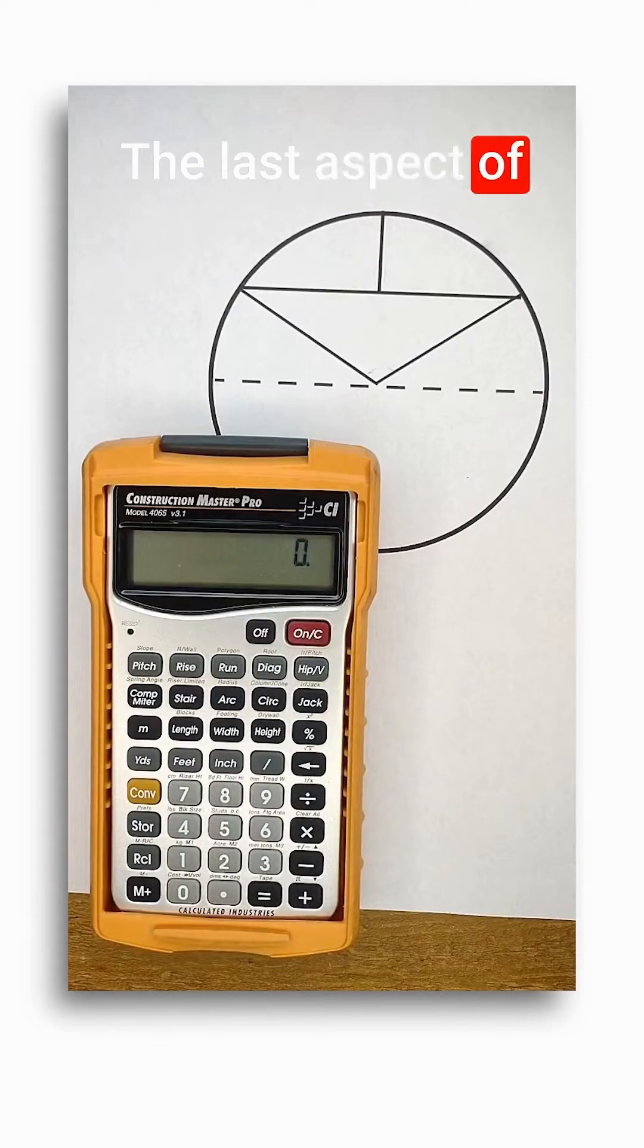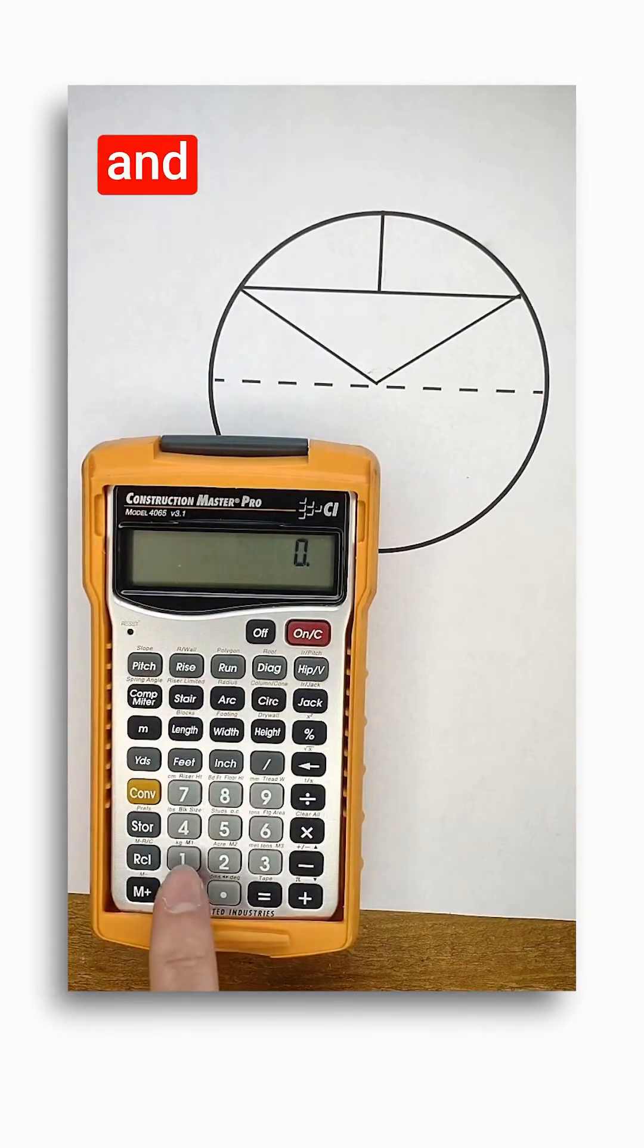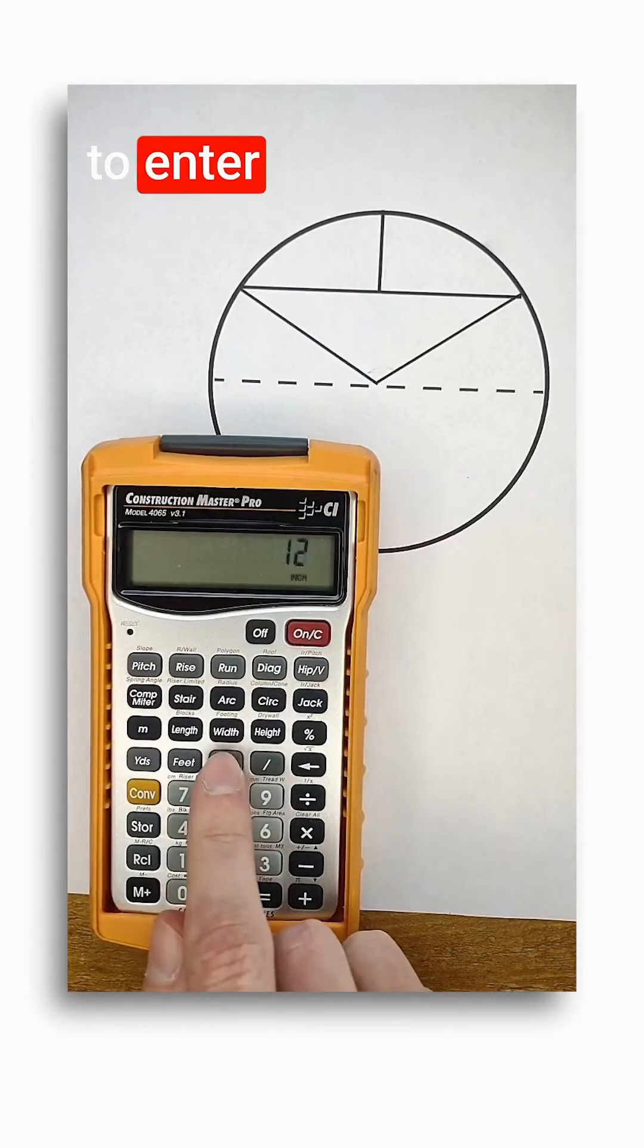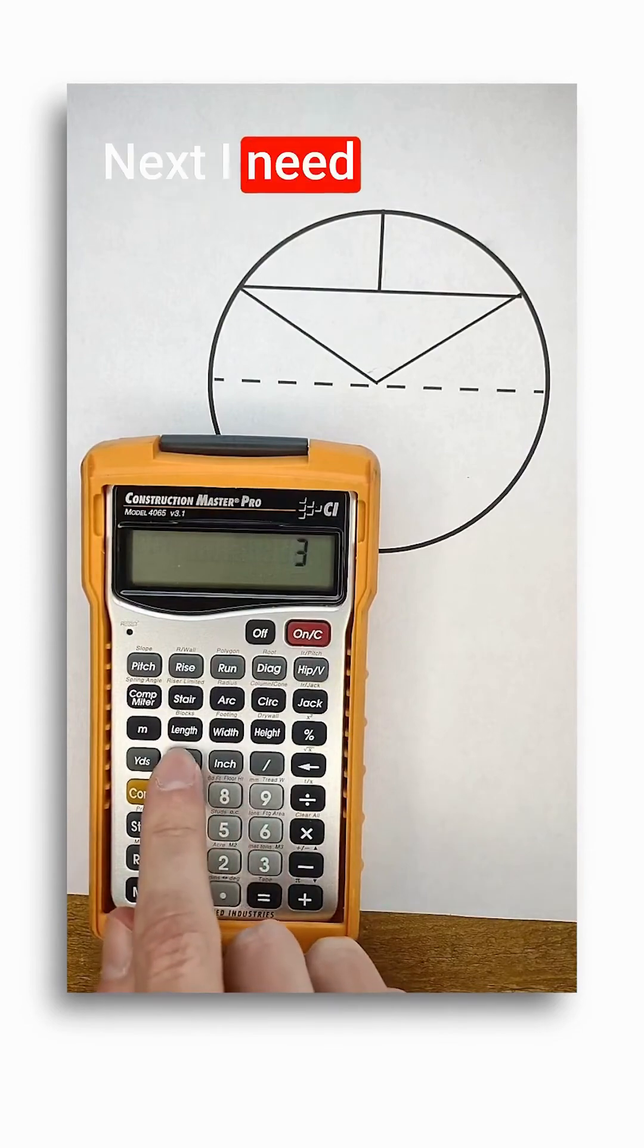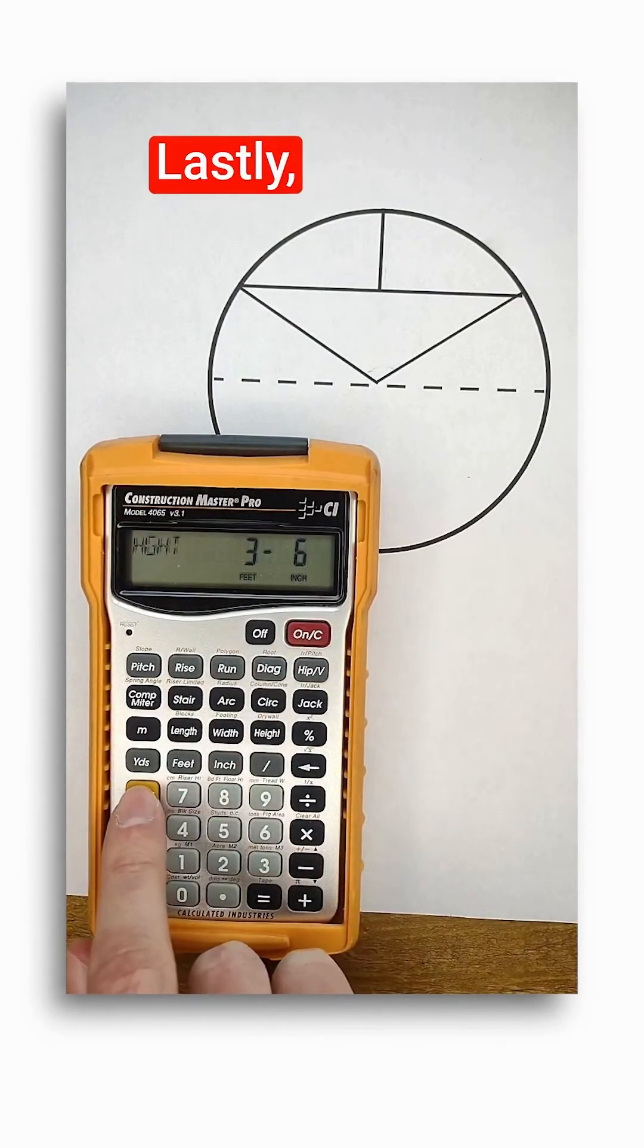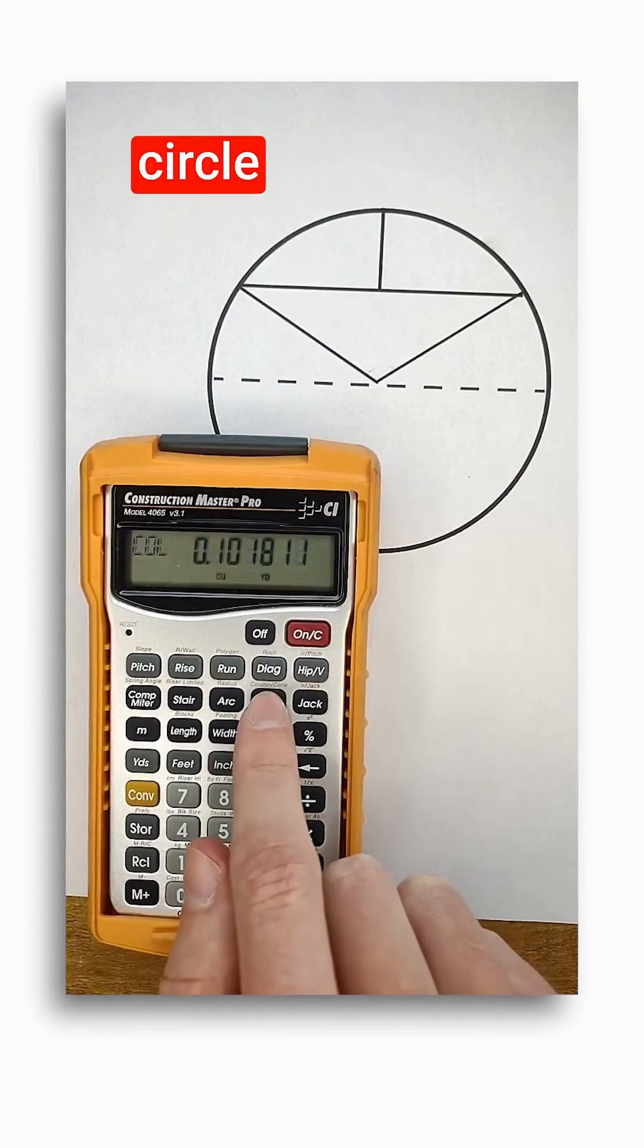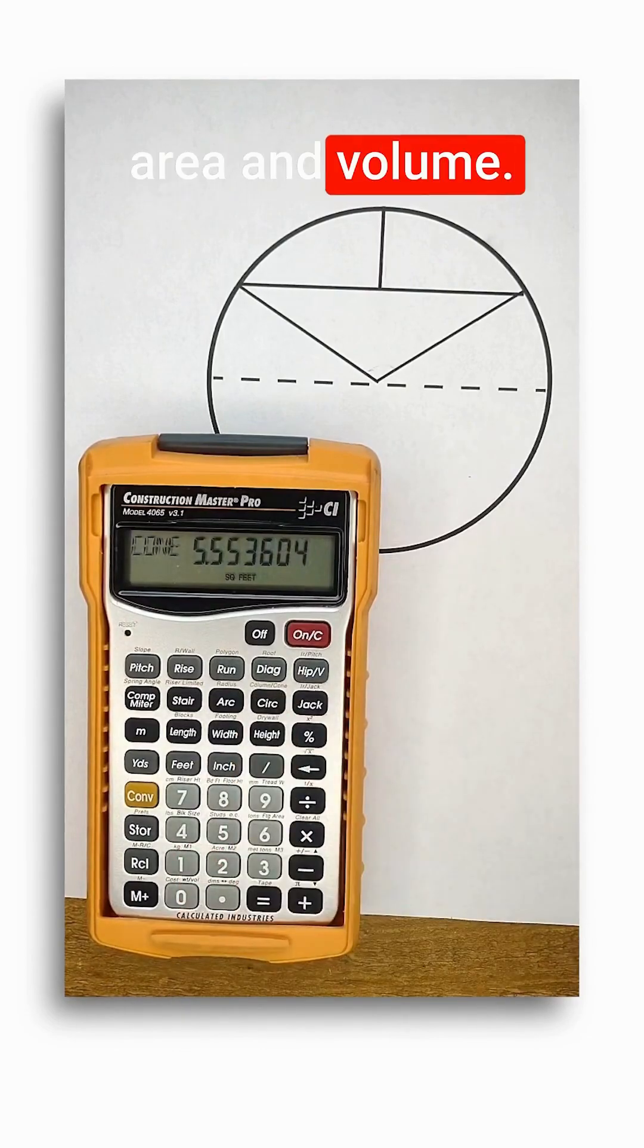The last aspect of circles the calculator can understand is 3D shapes like columns and cones. For both of those, first I need to enter the diameter and then push the circle button. Next, I need to enter the height and push the height key. Lastly, pushing convert before the circle button will apply the secondary function for columns and cone surface area and volume.